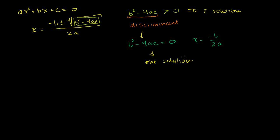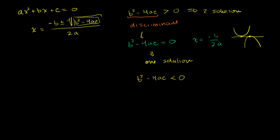That one solution is actually the x-coordinate of the vertex, because you'll have a parabola that just touches the x-axis at exactly one point when b² - 4ac = 0. The last situation is if b² - 4ac is less than 0 — then you get a negative number under the radical.